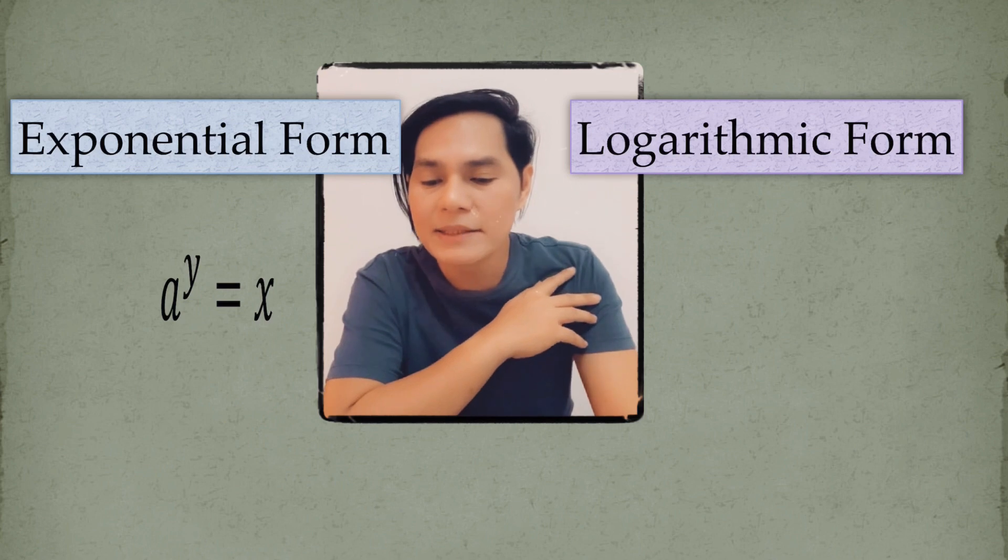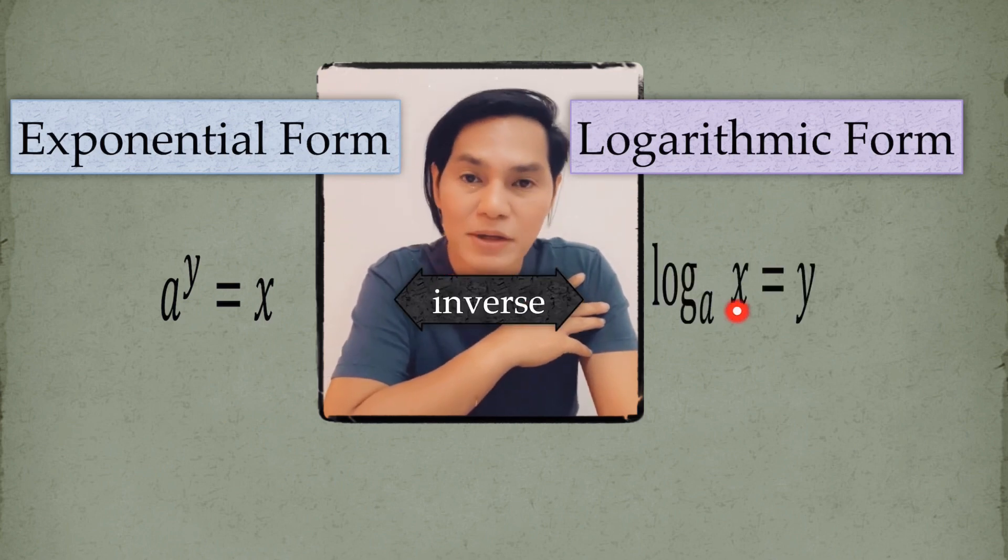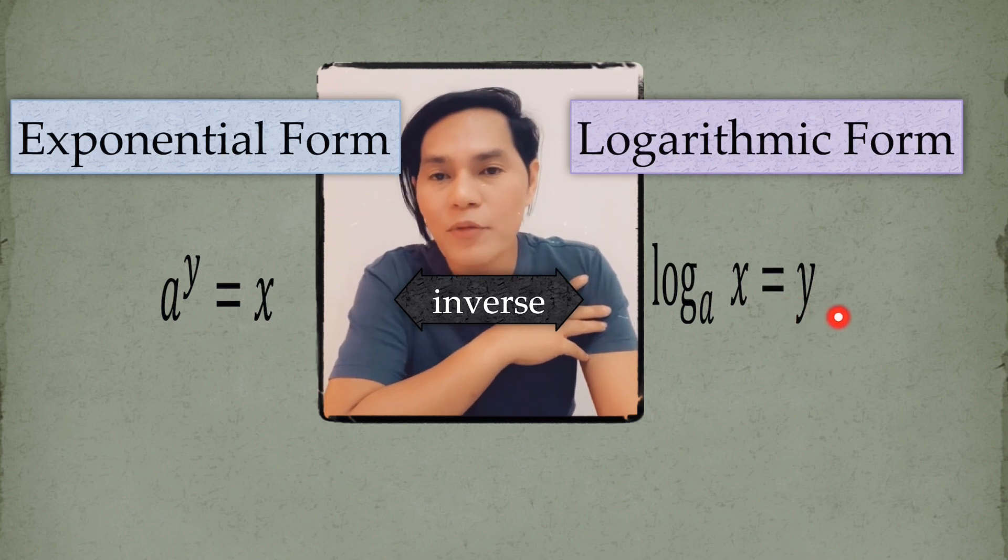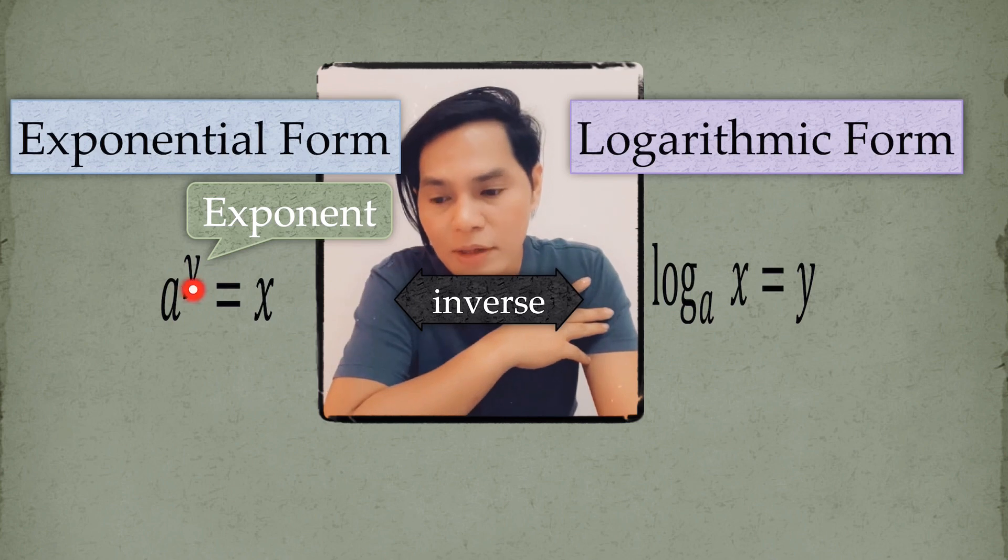And take note of that, the inverse of exponential form is the logarithmic form. That's how you write it. Remember that one. Now, here in exponential form, Y is the exponent. Look at it. And then the base is A.